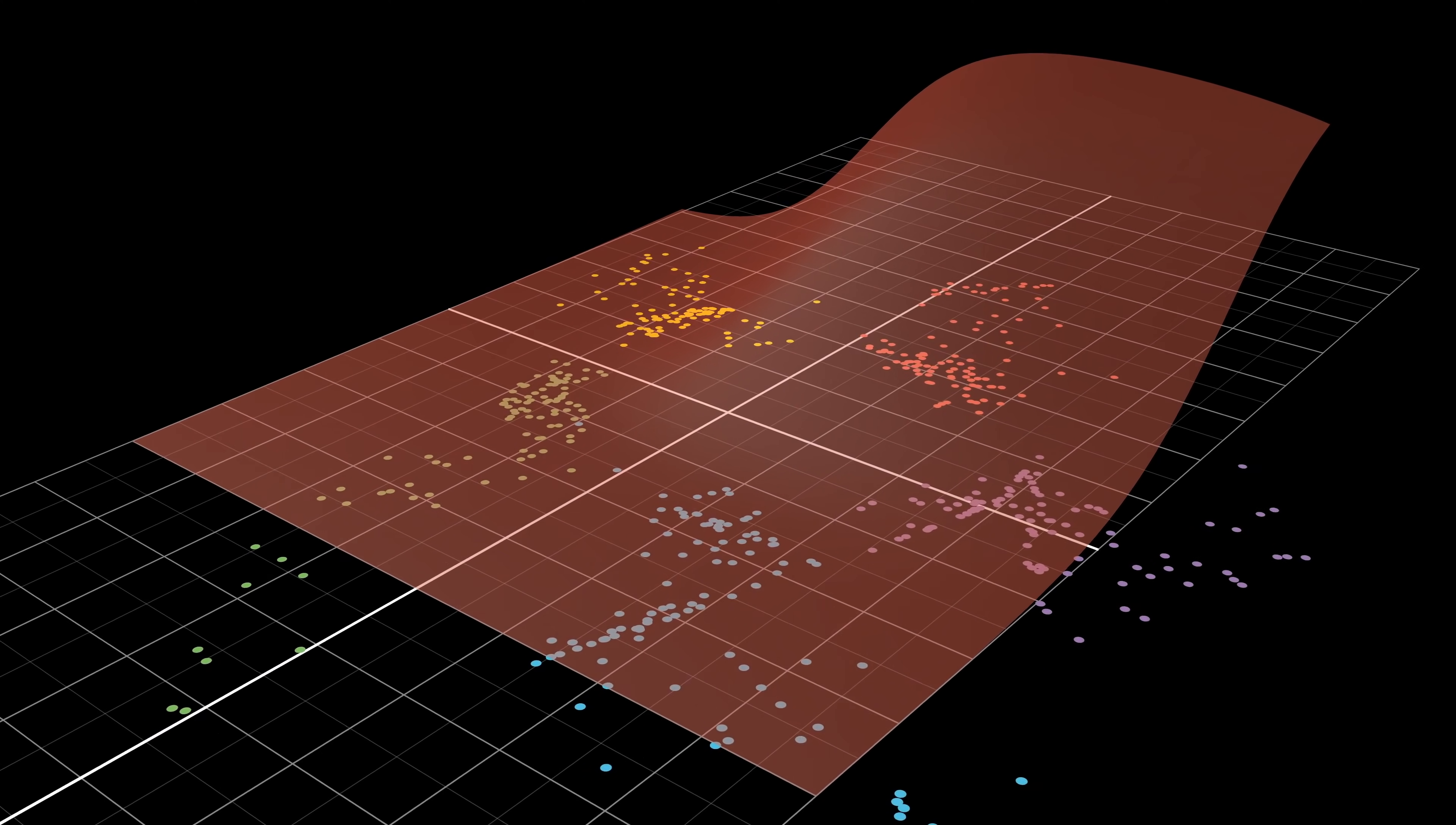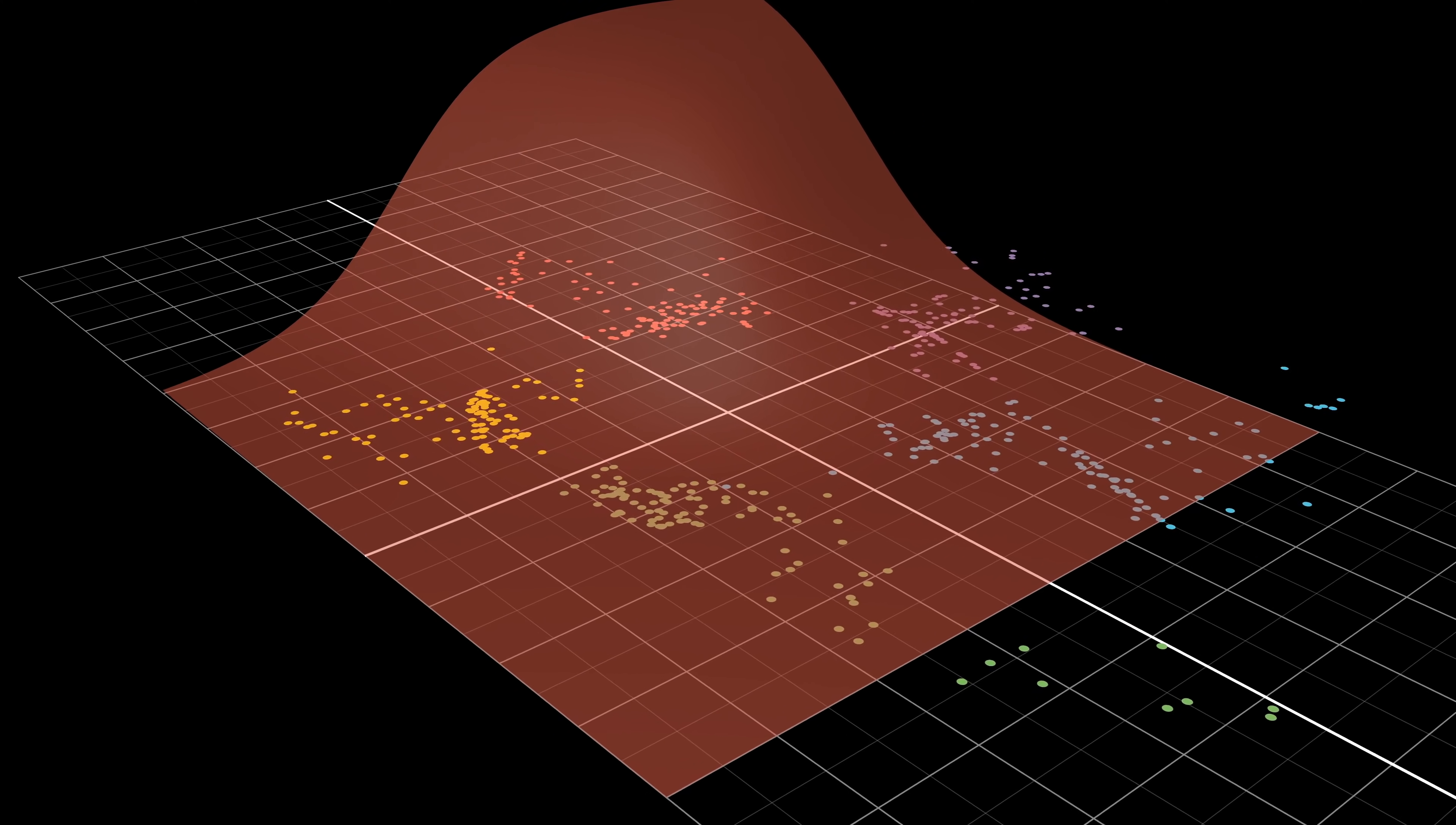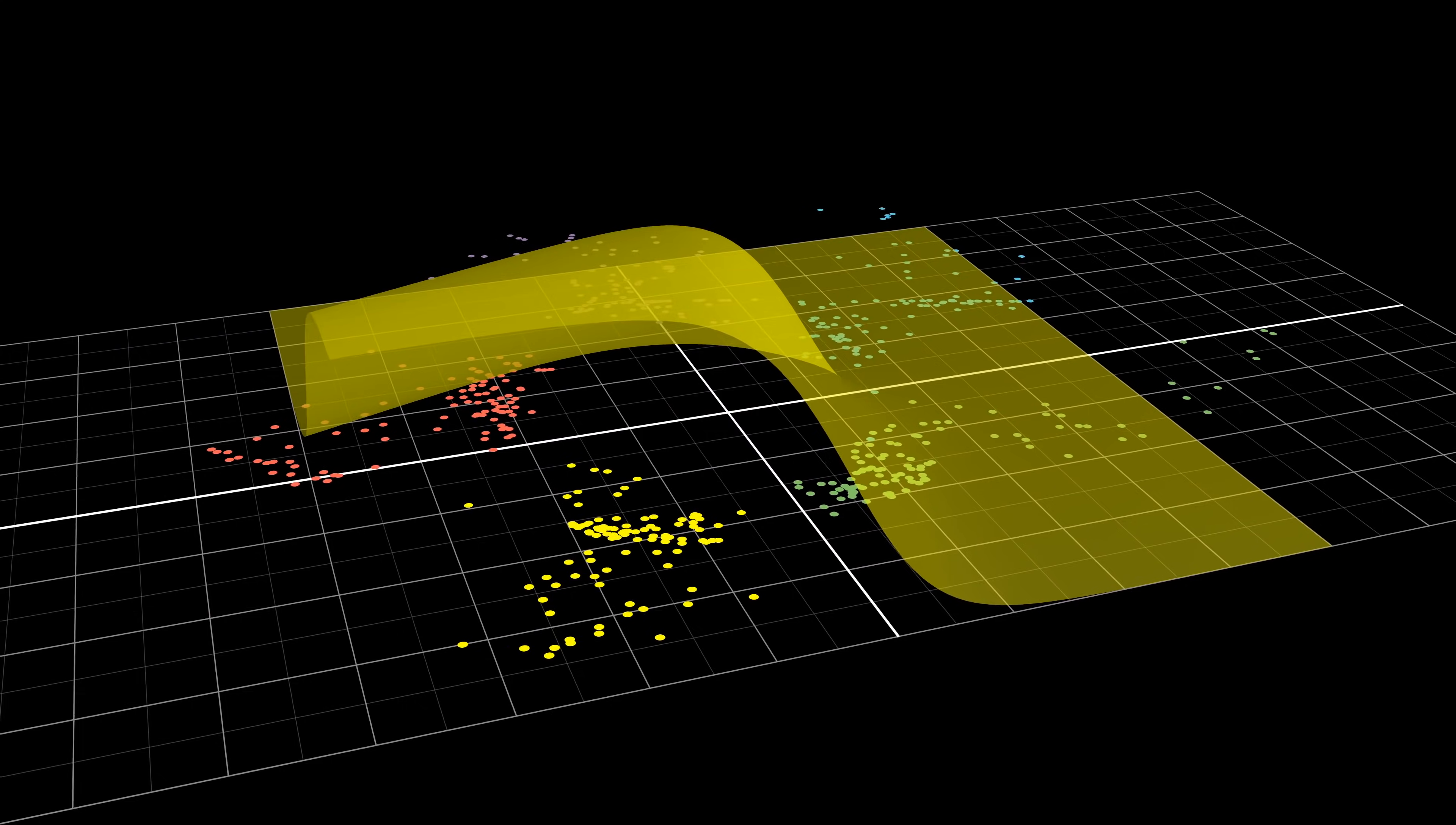The red surface looks like this. Notice the bump around where the inputs correspond to red. This indicates a high probability that the input point is red. Let me plot each of the five colors sequentially. Once again, feel free to pause and reflect.